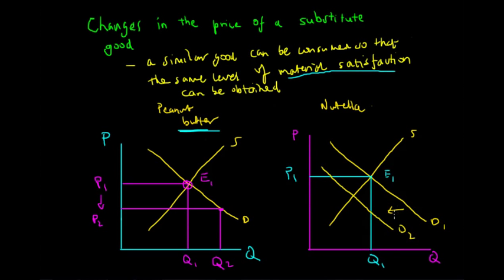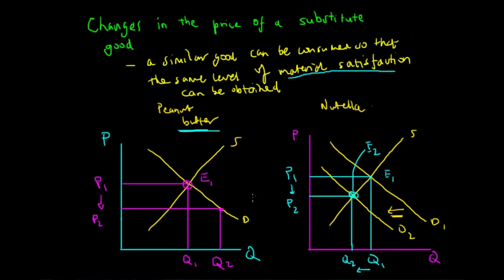At this new point we experience a new equilibrium. The equilibrium price of Nutella goes down, as well as the equilibrium quantity traded — Q1 down to Q2 and P1 down to P2 — giving a new equilibrium at E2. Because peanut butter has decreased from P1 to P2 and is a perfect substitute for Nutella, the demand for Nutella at every level of quantity goes down, and therefore both the equilibrium price and equilibrium quantity traded for Nutella also go down.